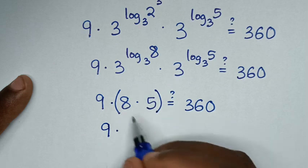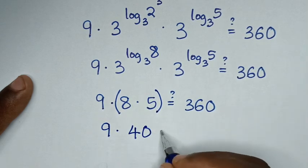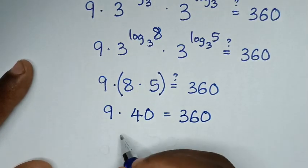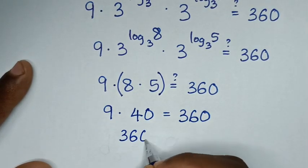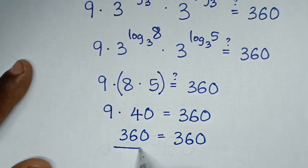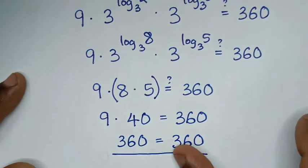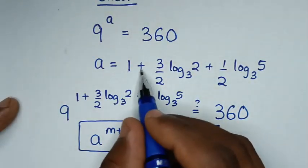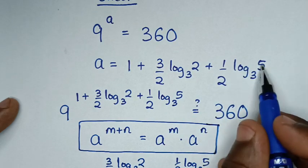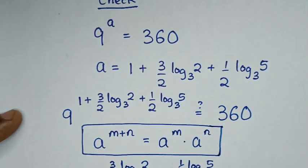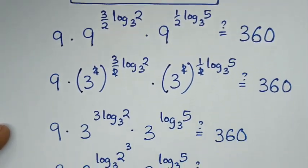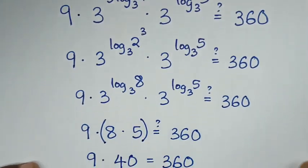So it will be 9 times 8 times 5, which is 9 times 40, equal to 360. Left side equals right side, so it is true. The value of a is confirmed as 1 plus 3 over 2 log of 2 base of 3 plus 1 over 2 log of 5 base of 3. Thank you, don't forget to subscribe to my channel and see you in the next video, bye bye.